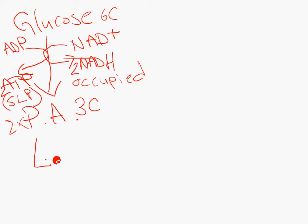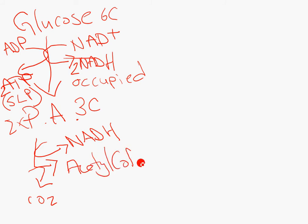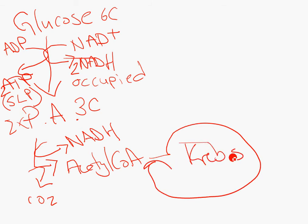So pyruvic acid then goes through its one prep step. We'll release carbon dioxide, make another NADH, becomes acetyl-CoA and feeds into the Krebs cycle. I'm going to run out of space. So this diagram is going to get very messy, but I hope you get the picture and again try to reproduce this on your own.